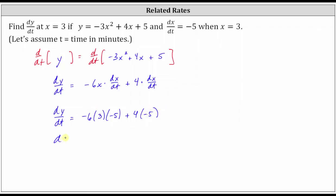Simplifying, we have dy/dt equals 90 plus negative 20, which is equal to positive 70.